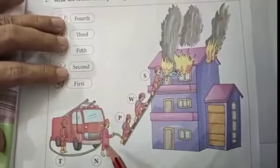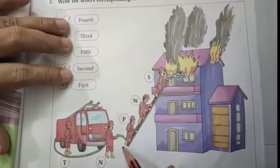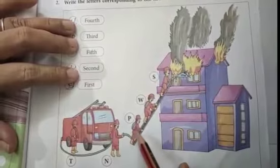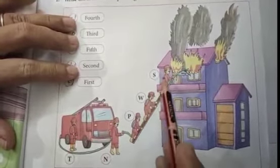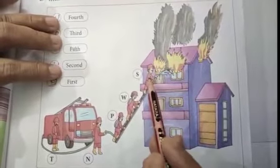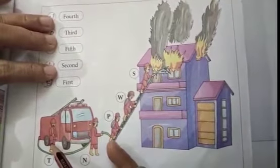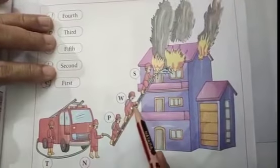Another example. We can see in these pictures some of the firemen, they are climbing the ladders with the water pipe. Correct? So this picture we can see that who is in the first in the ladder. You see that? This is the first one. Then second. Then third. Then fourth. Then fifth. So children, I think you have understood how to write the ordinal numbers.